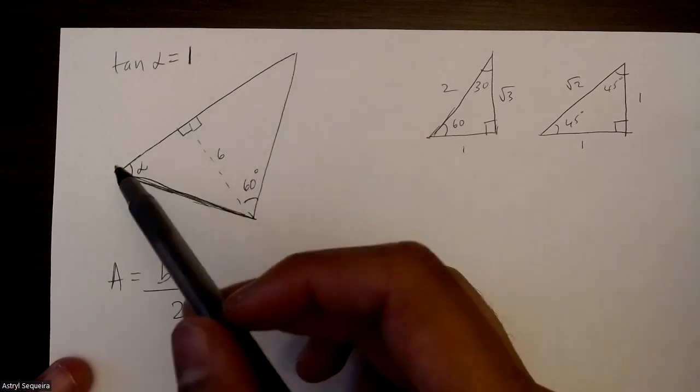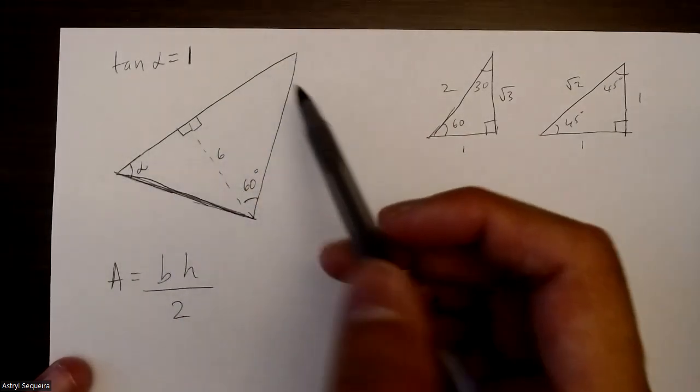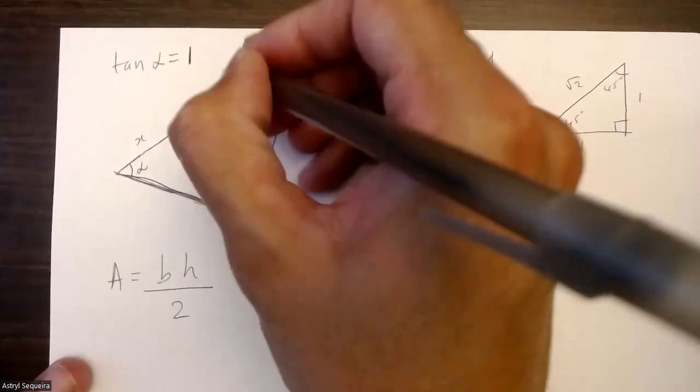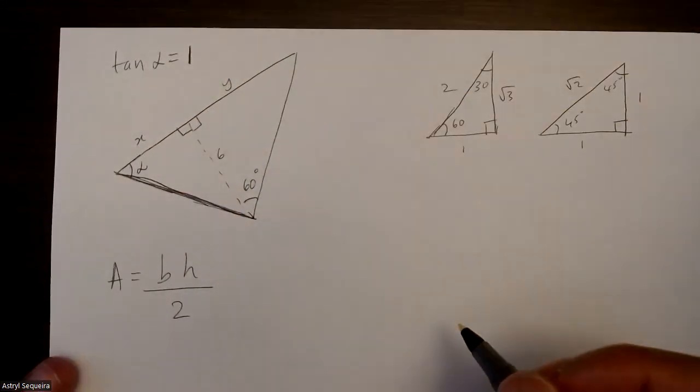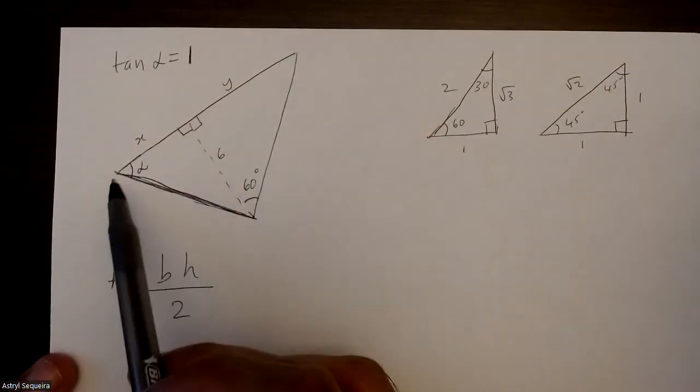In this triangle, I know that the height here is six, but I don't know what the base is, so I need to determine this entire base over here. I'm just going to call this x and I'll call this y.